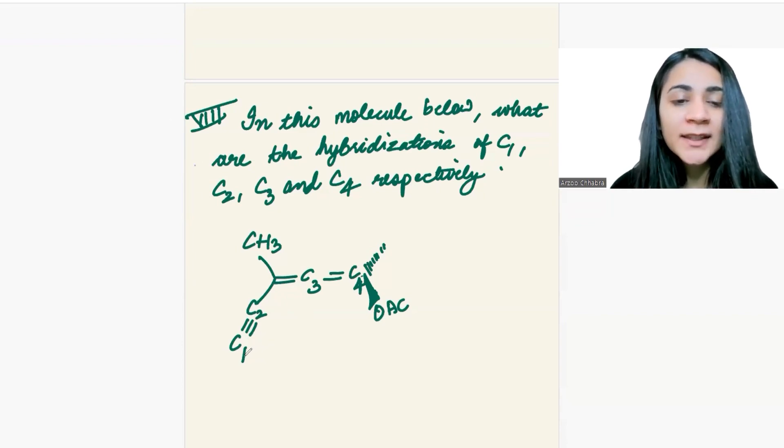So C1, if you think about it, it's a triple bond, and triple bonded carbons are SP hybridized carbons. C2 carbon is also a triple bond, that will make it an SP hybridized carbon.